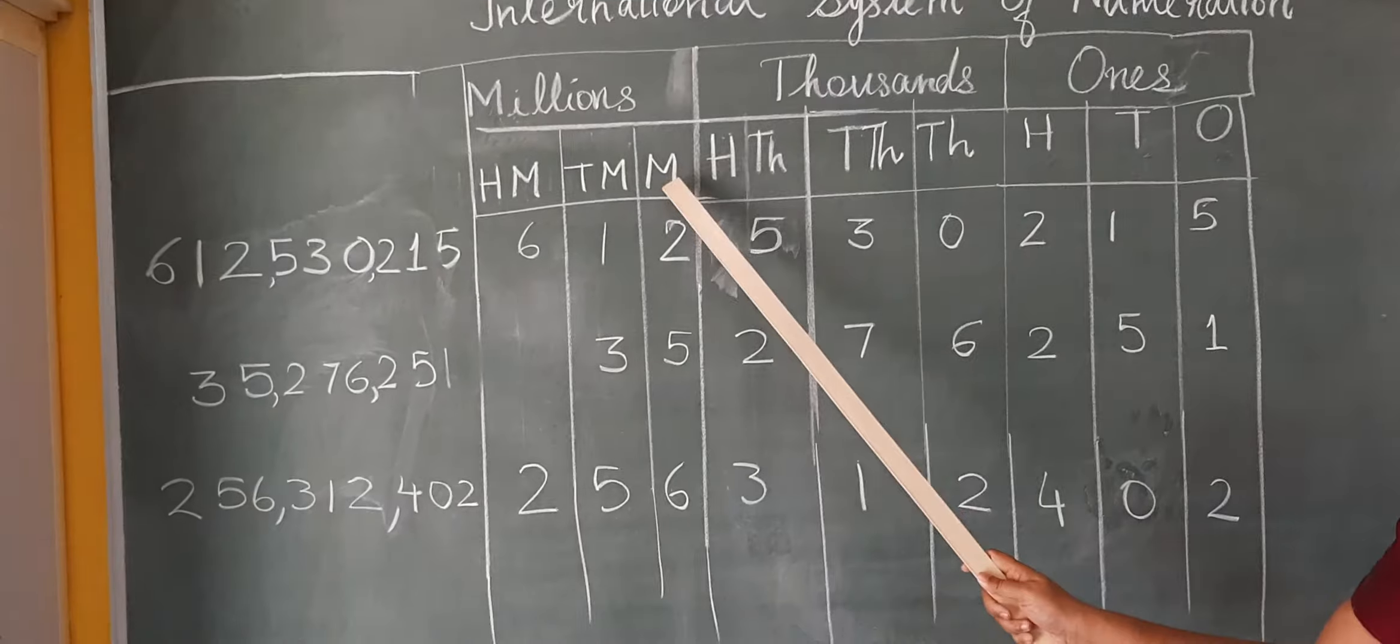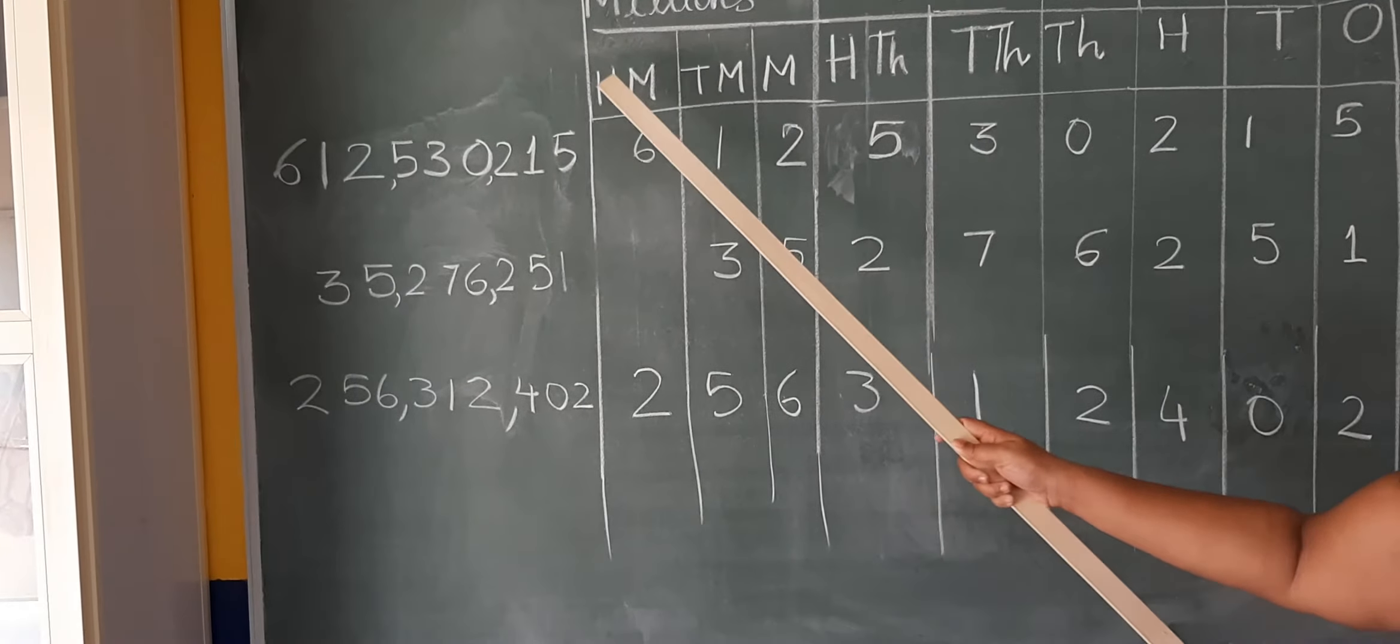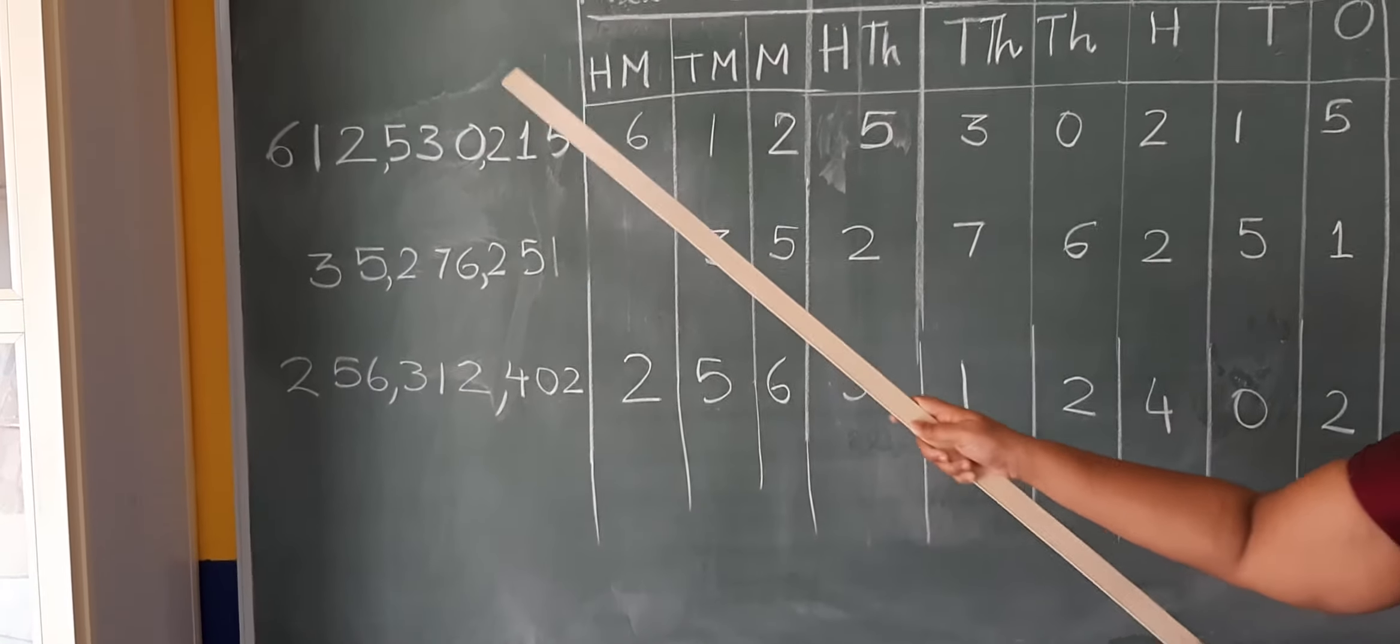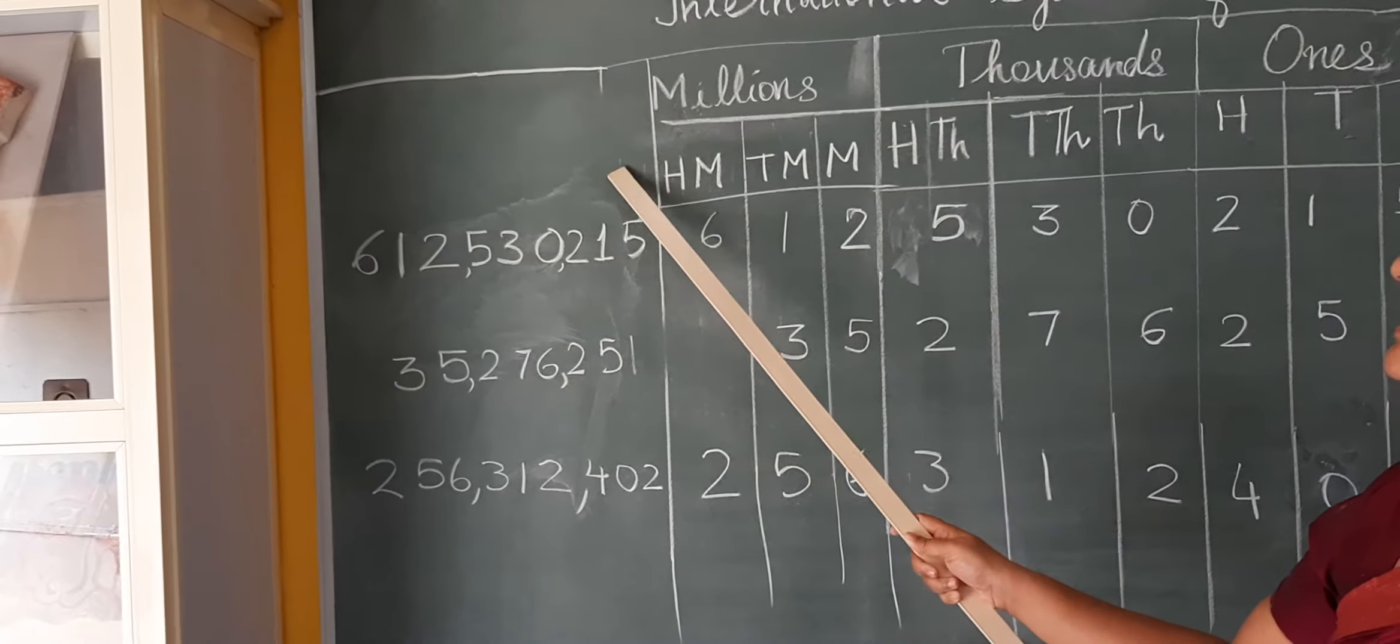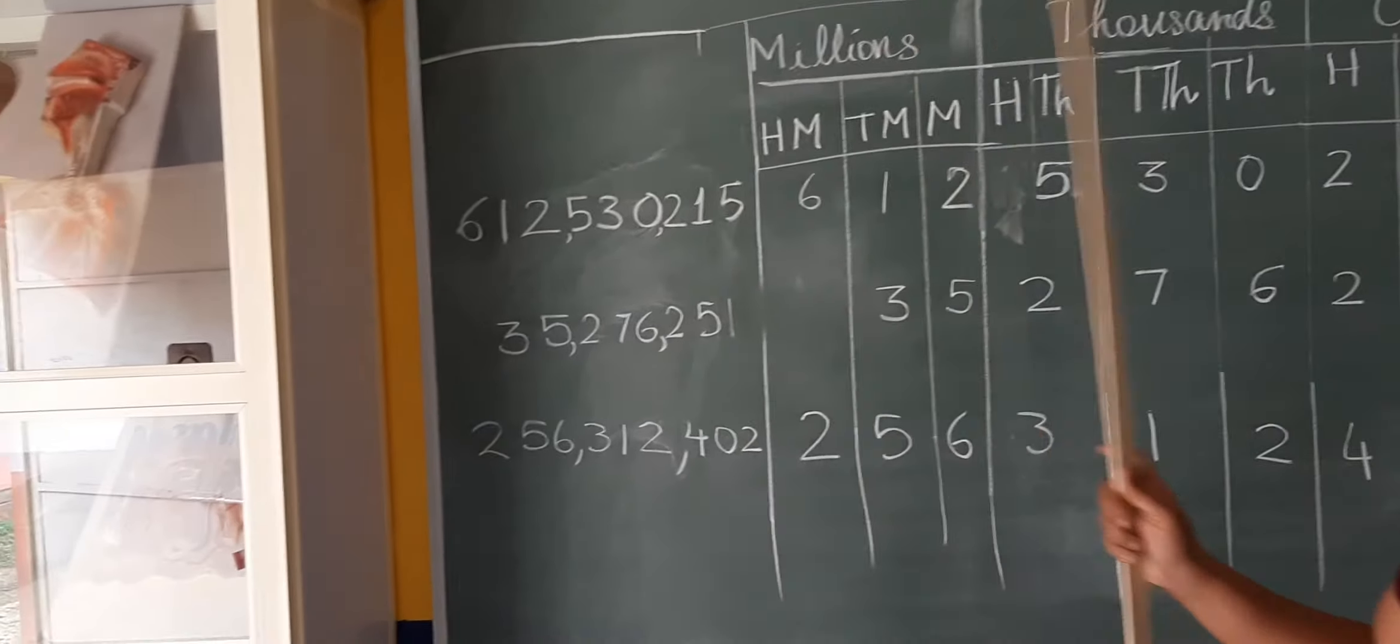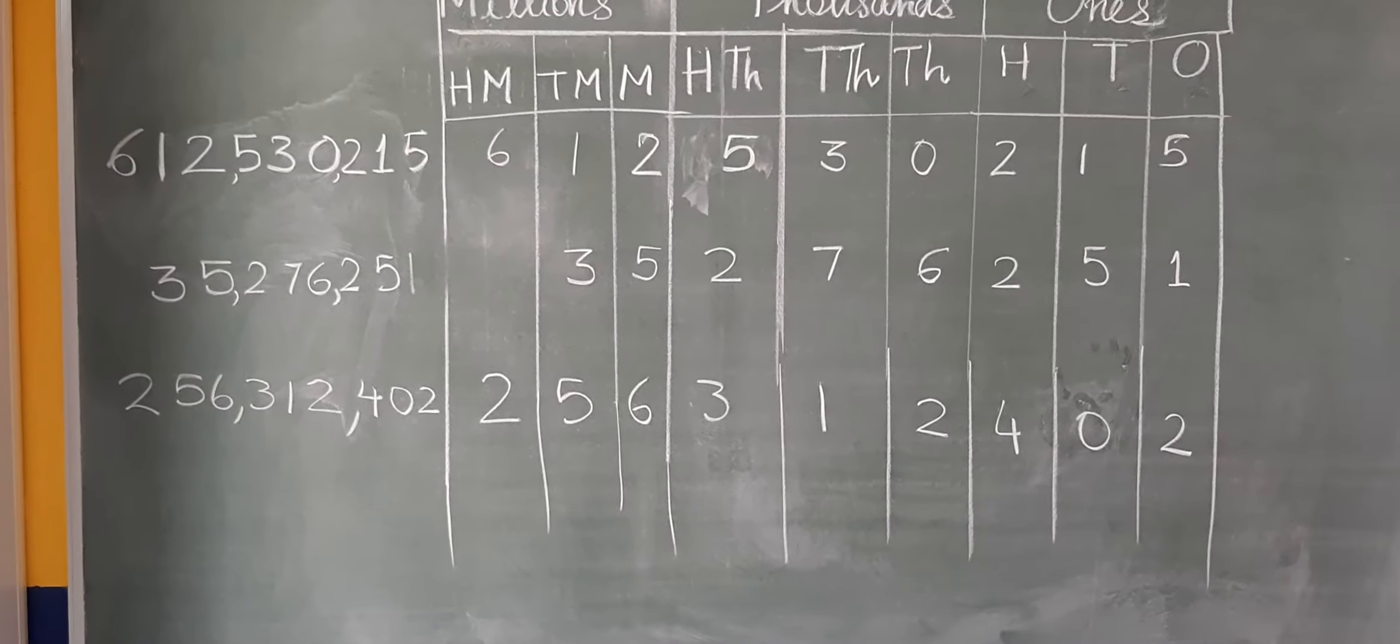The millions period also has three place values: millions, ten millions, and hundred millions. If you go further, you have the billions period: billions, ten billions, and hundred billions. That is how we use the international system of numeration.